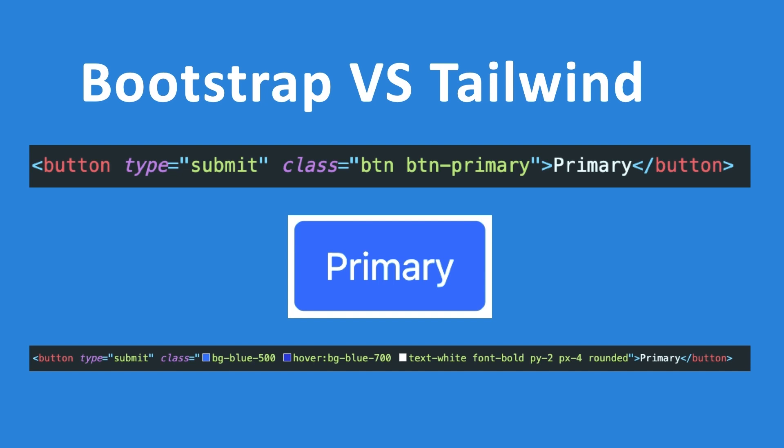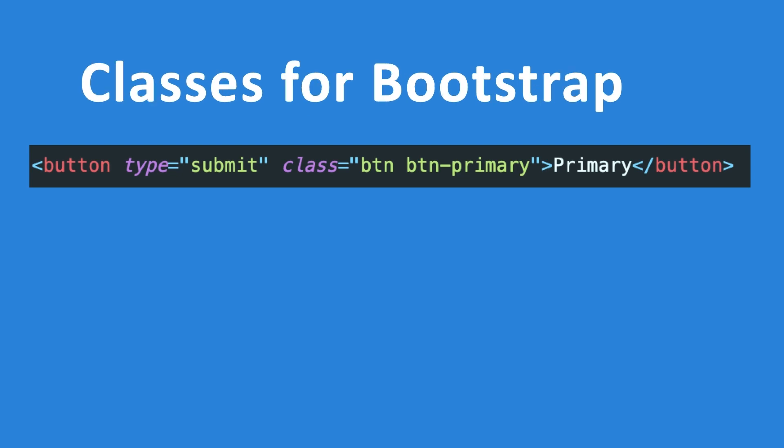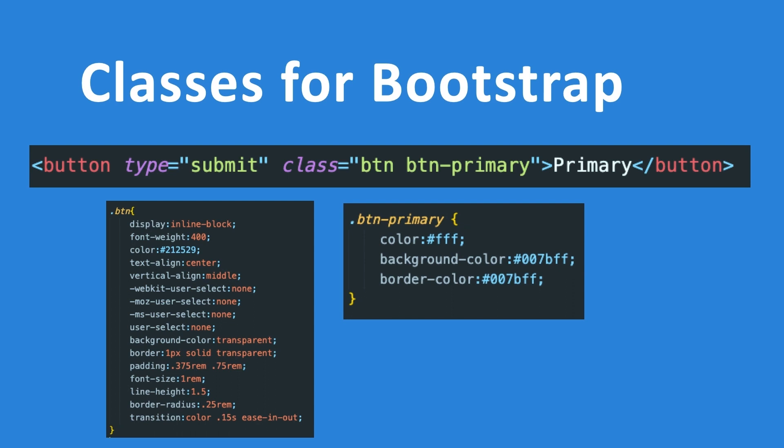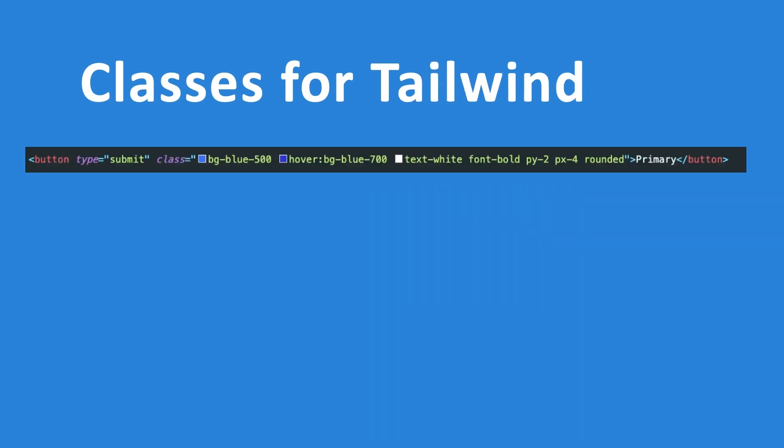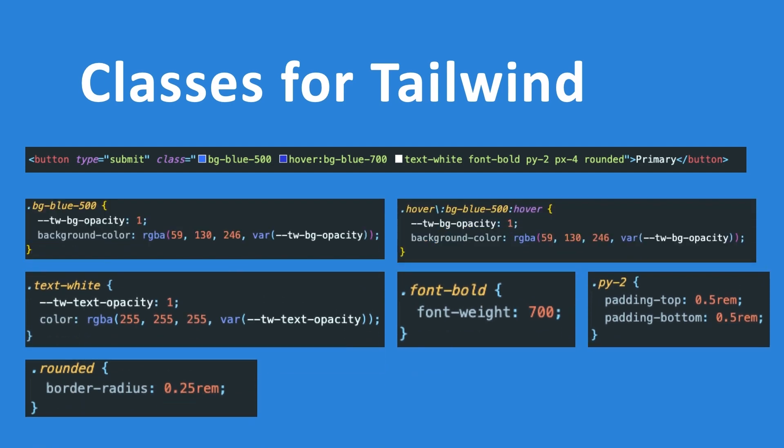You don't want to use the same exact button for every scenario. That's where I prefer Tailwind over Bootstrap. If you take the same Bootstrap button and look at the underlying classes, you can see a lot of styling inside .btn and .btn-primary. Comparing this to Tailwind, we have six different classes called, each with one or two lines of styling — so it's much more transparent what each class does.